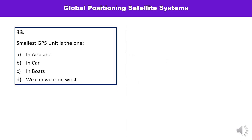Question number thirty-three: The smallest GPS unit — out of four options: in an airplane, in a car, in boats, or worn on the wrist — which is the smallest GPS unit? The smallest unit is the one we can wear on the wrist. That is the correct answer.